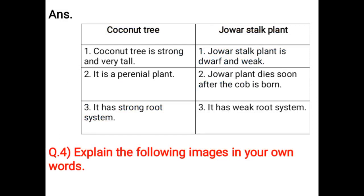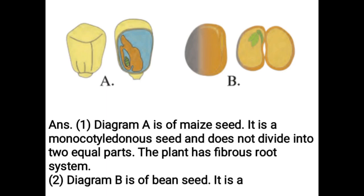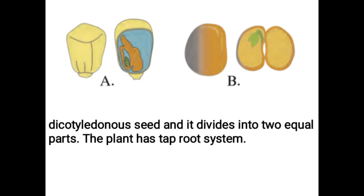Explain the following images in your own words. Diagram A is of a maize seed — it is a monocotyledonous seed and does not divide into two equal parts. The plant has a fibrous root system. Diagram B is of a bean seed — it is a dicotyledonous seed and it divides into two equal parts. The plant has a tap root system.